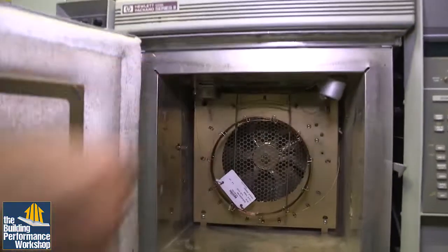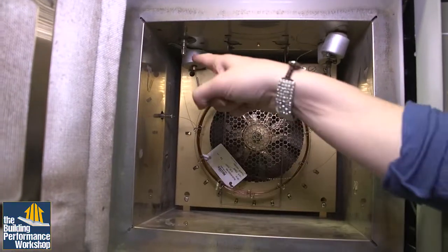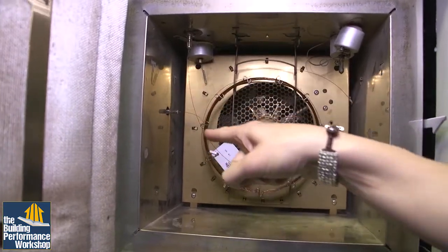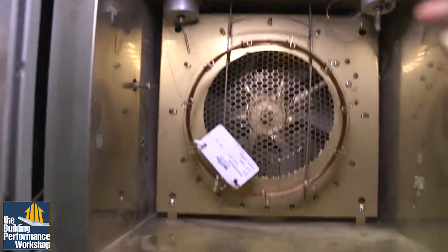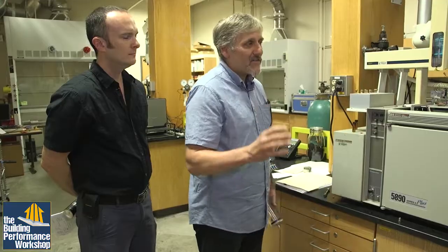Well, you know, companies aren't required to list all the ingredients that are in their products. And to understand all the ingredients that are in consumer products requires pretty sophisticated analysis. So if you look at this instrument right here, when we do analysis of consumer products, we have to inject a sample of the consumer product into this machine. And this machine to just analyze the composition of one consumer product takes us about an hour and a half or so.